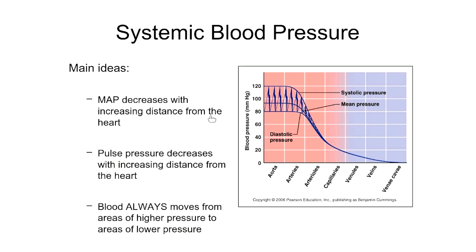Blood always moves from areas of higher pressure to lower pressure. Looking at the MAP on the graph, average pressure declines as blood moves away from the heart. Pressure is highest in the arteries and lowest in the veins — lower than in the capillaries — because blood moves from arteries to capillaries to veins before returning to the heart.